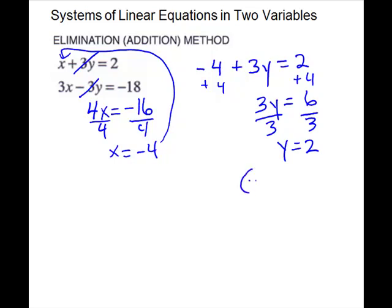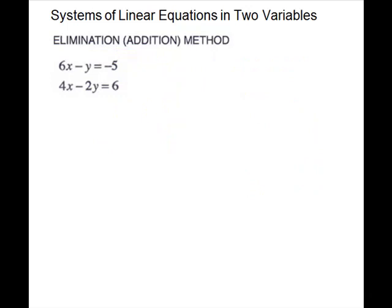So my answer is the ordered pair negative 4, 2 as the solution to this system. For my next system of equations, I can't just add them and cancel anything right now. But I can see if I multiply my first equation by a negative 2, it would give me a positive 2y, and then I could add them and they will cancel. So I'm going to multiply through the first equation by a negative 2.